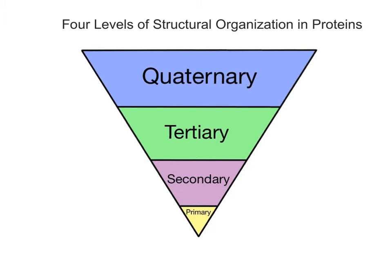Proteins display four levels of structural organization: primary or first order, secondary or second order, tertiary or third order, and quaternary or fourth order.